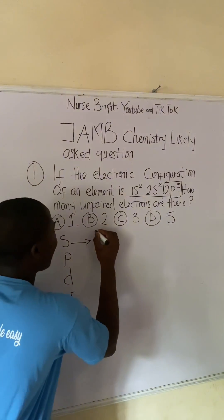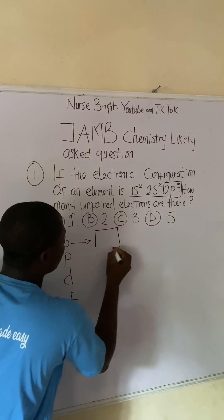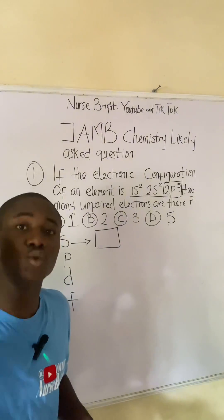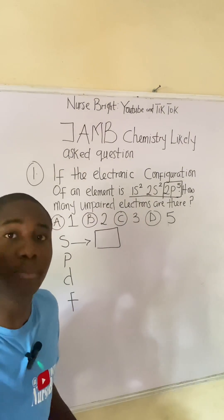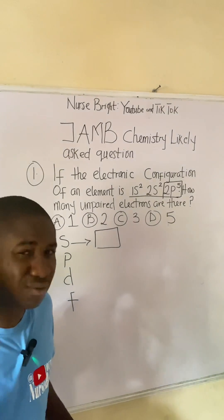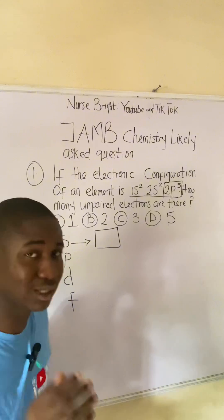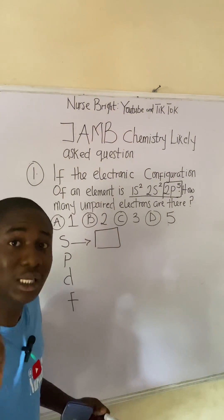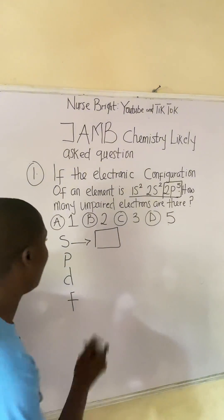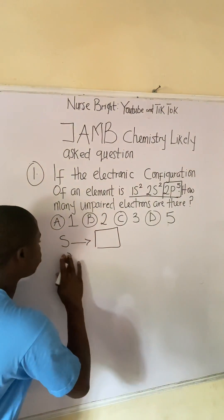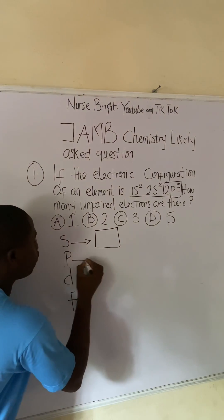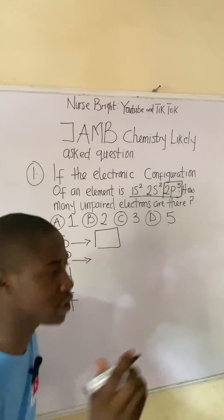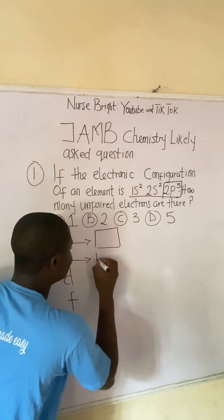Whenever we draw the s orbital, we draw just one box — please take note, this is very important so you can solve questions on this. Whenever you have to draw the p orbital, you draw three boxes. Just take note.